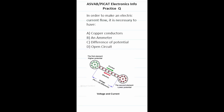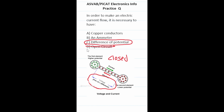Practice test question: in order to make an electric current flow, it's necessary to have? First of all, this is a closed circuit, so D is not correct — you have to have a closed circuit for current to flow. In addition to having a closed circuit, there has to be a potential difference in voltage. So this one is going to be C, a difference of potential.